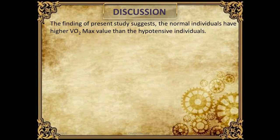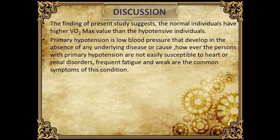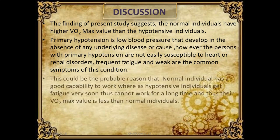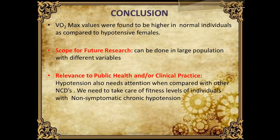Discussion: The findings suggest that normal individuals have a higher VO2 max value than hypotensive individuals. Primary hypotension — low blood pressure that develops in the absence of an underlying disease — means these persons are not easily susceptible to heart or renal disease, but frequent fatigue and weakness are common complaints. This could be the probable reason that normal individuals have a good capacity to work, whereas hypotensive individuals fatigue very soon and thus cannot work for long, resulting in a lower VO2 max. Studies also suggest a correlation between hypotension and anxiety and depression.